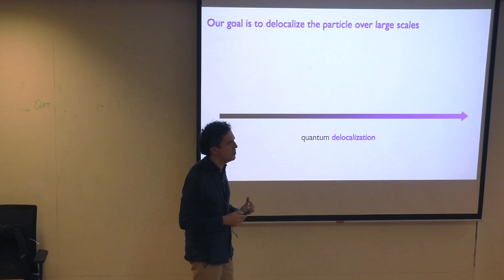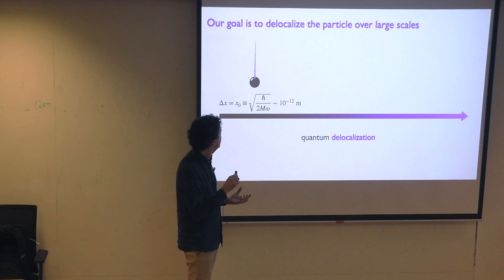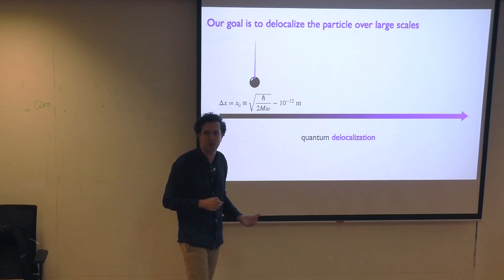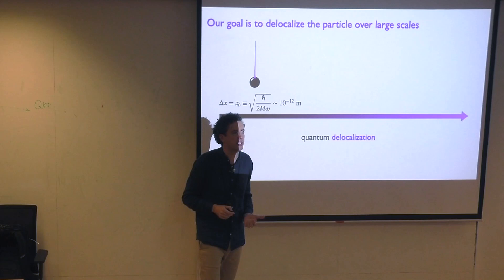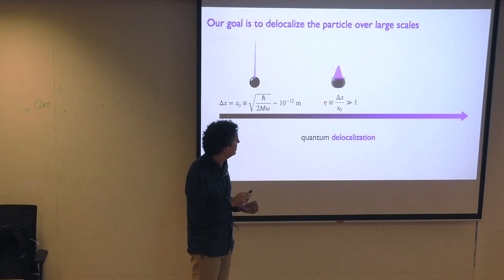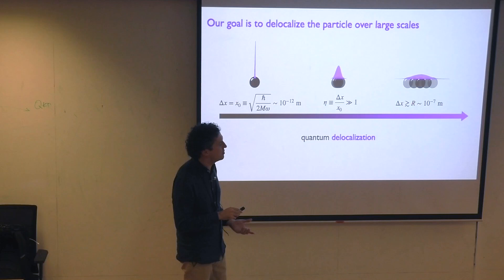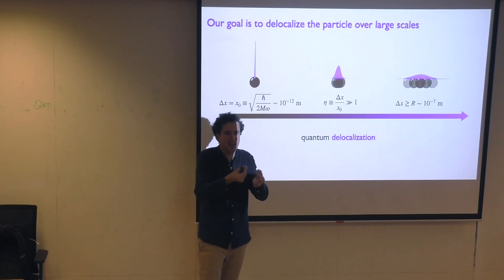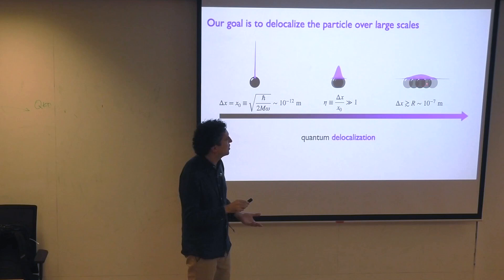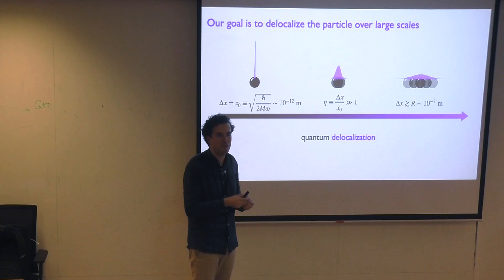Now the goal is: how to use this control to de-localize the center of mass over large scales. When we cool to the ground state, the center of mass is localized to this minute length scale — the zero-point motion length scale. What we would like to do is to really try to expand this wave function to length scales larger than the zero-point motion. The figure of merit is this parameter eta — how much we delocalize over the zero-point motion. Ideally we would like to delocalize the particle over scales comparable to its radius, 100 nanometers. So this means increasing the wave function by five orders of magnitude — as you can imagine, this plot is not to scale.